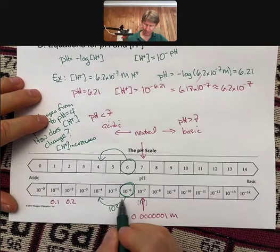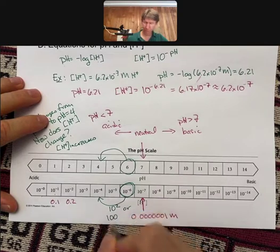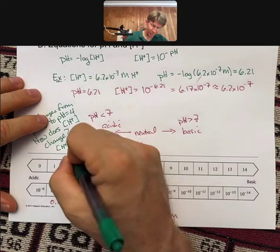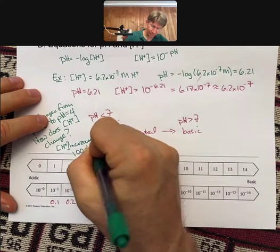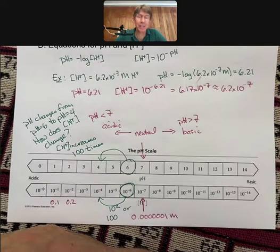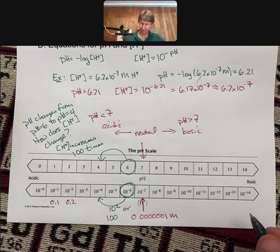The concentration of H plus increases 100 times for a pH change of 2. It doesn't sound like very much, the pH change 2. However, the concentration of your hydrogen ions changed 100 times. Wow.